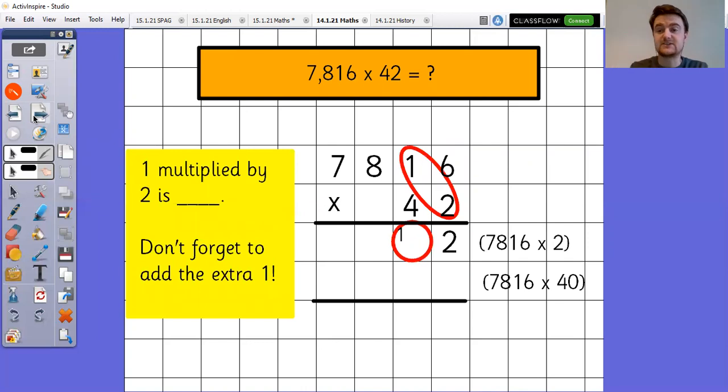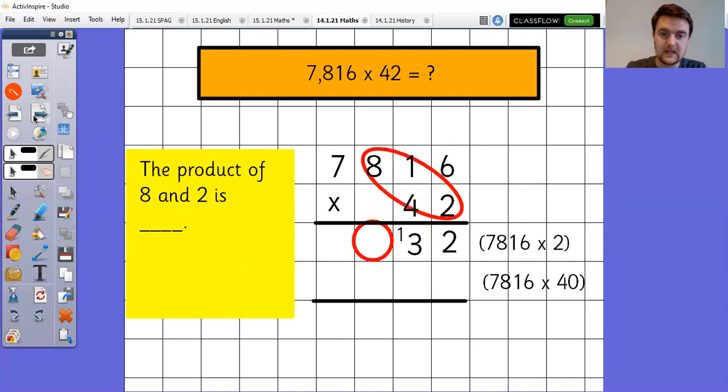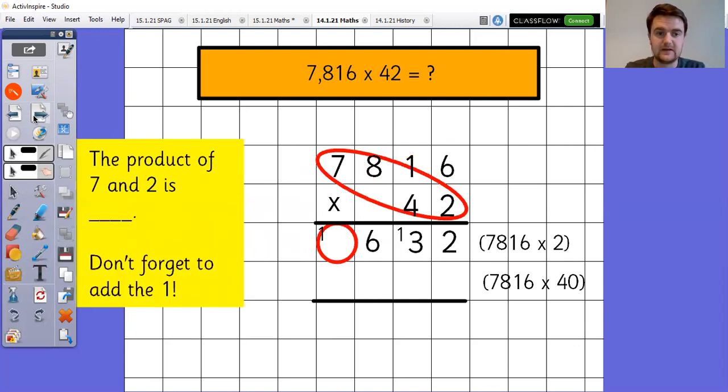So next, one multiplied by two is two. Add the extra one that's been exchanged gives me three. So three needs to go in there. Eight, the product of eight and two is 16. 16 doesn't fit in the hundreds column, so I'm going to have to put six in the hundreds column and exchange the 10 hundreds for 1,000. And finally, the product of seven and two is 14. Add the exchange one is 15. Because we don't have eight 10,000, so I can just put 15 straight away in. I don't need to worry about adding it at the top instead.